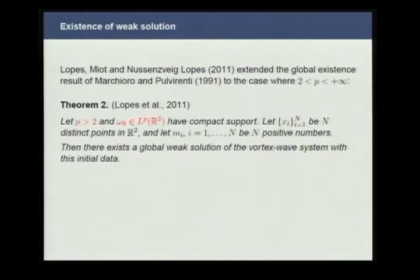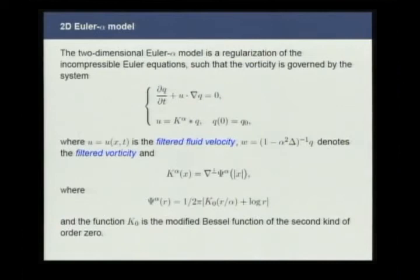In that work, they regularize the initial conditions and apply the solution given by Marchioro and Pulvirenti. What we are doing here is considering a different type of regularization. More precisely, we consider the solutions of the two-dimensional Euler-alpha model and show that the solutions of the vortex wave system can be seen as a limit of these solutions.